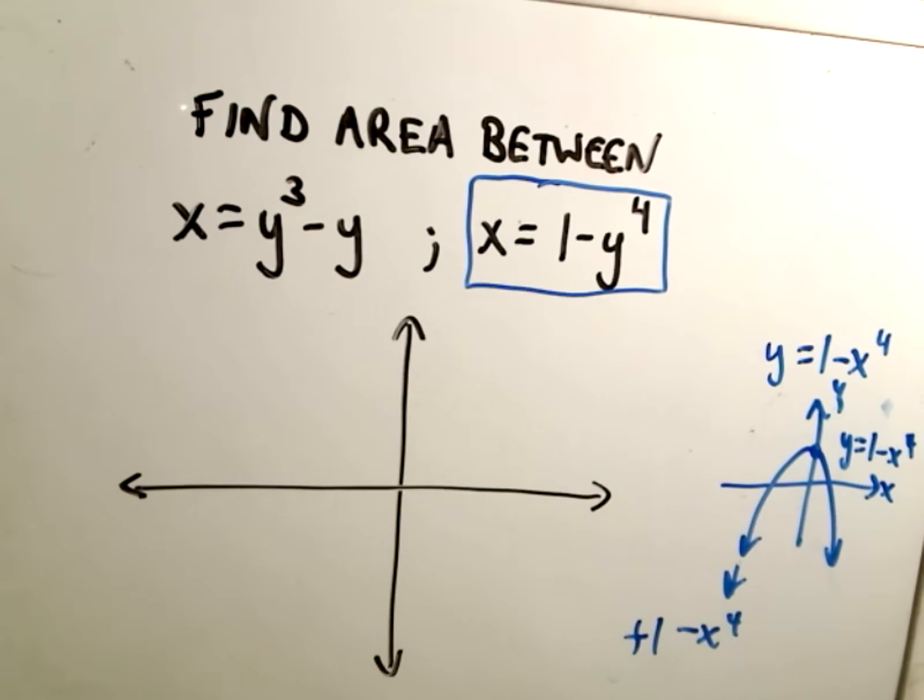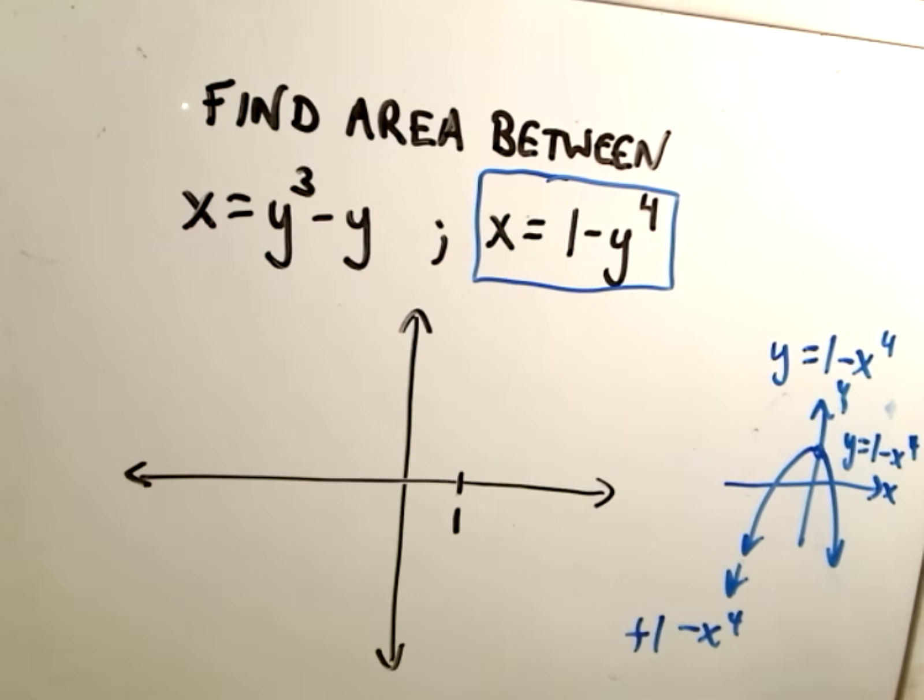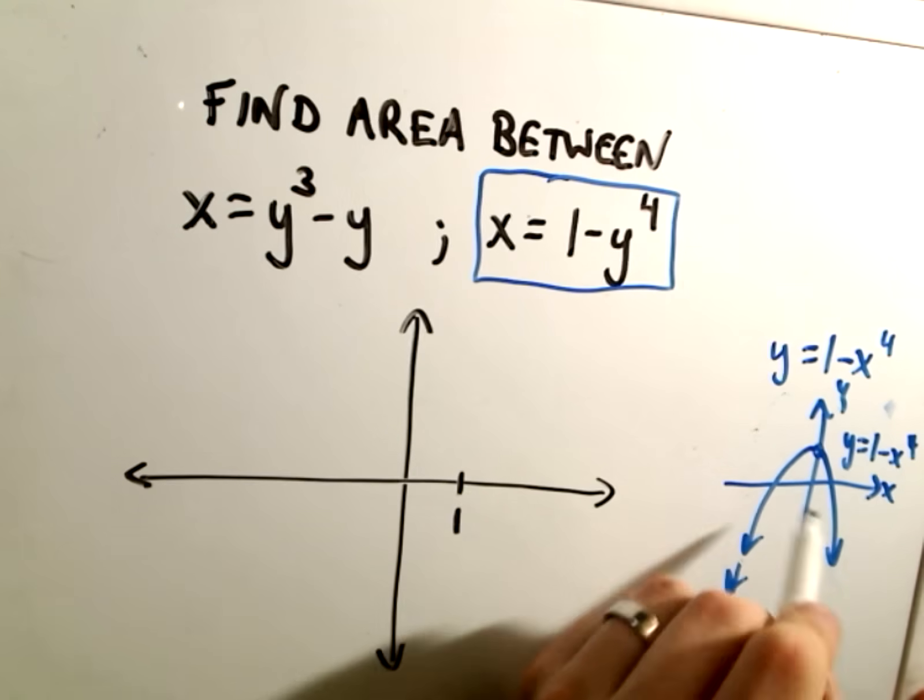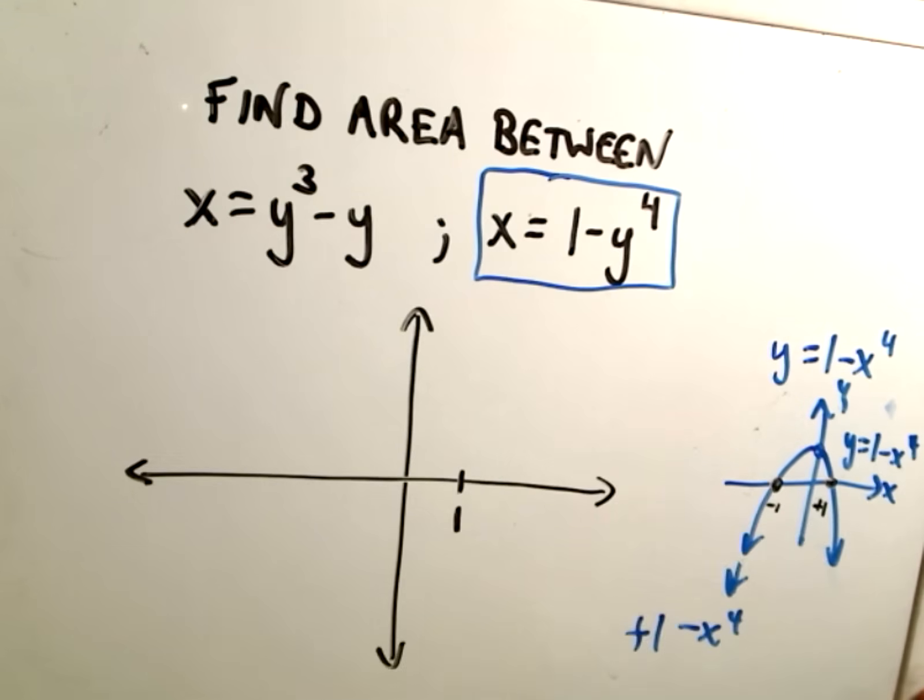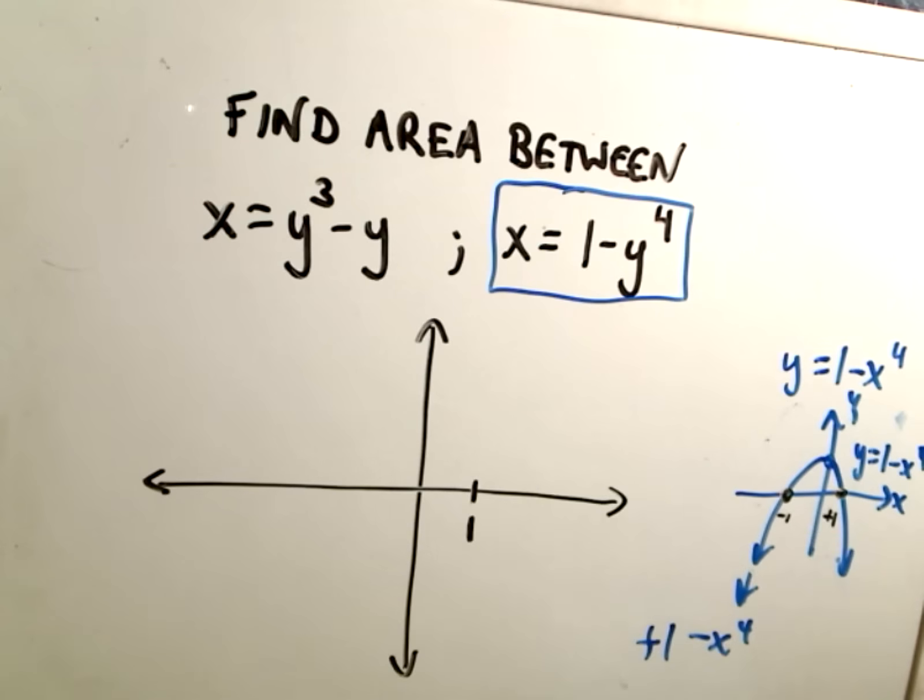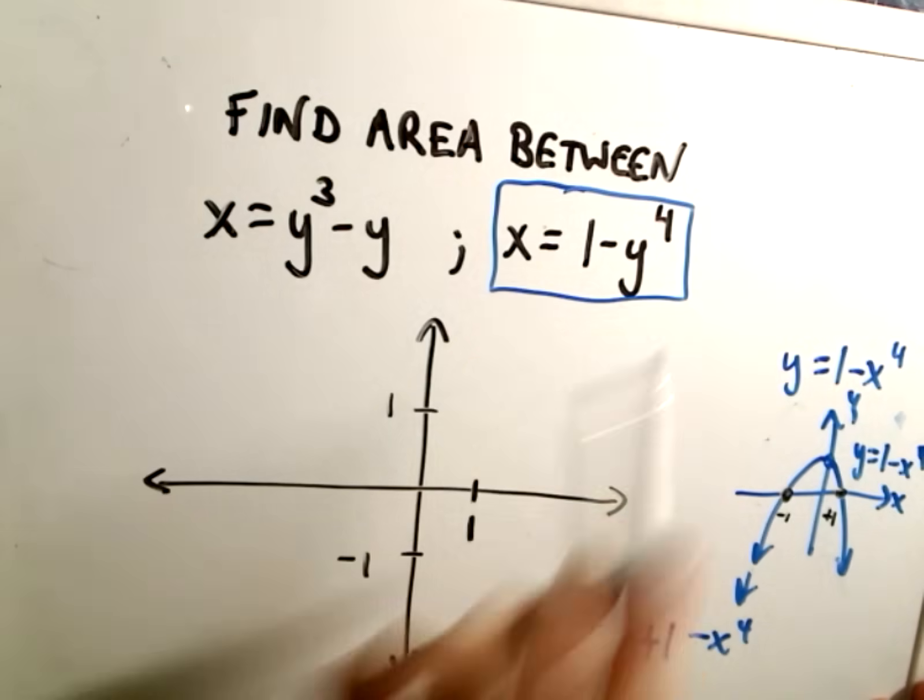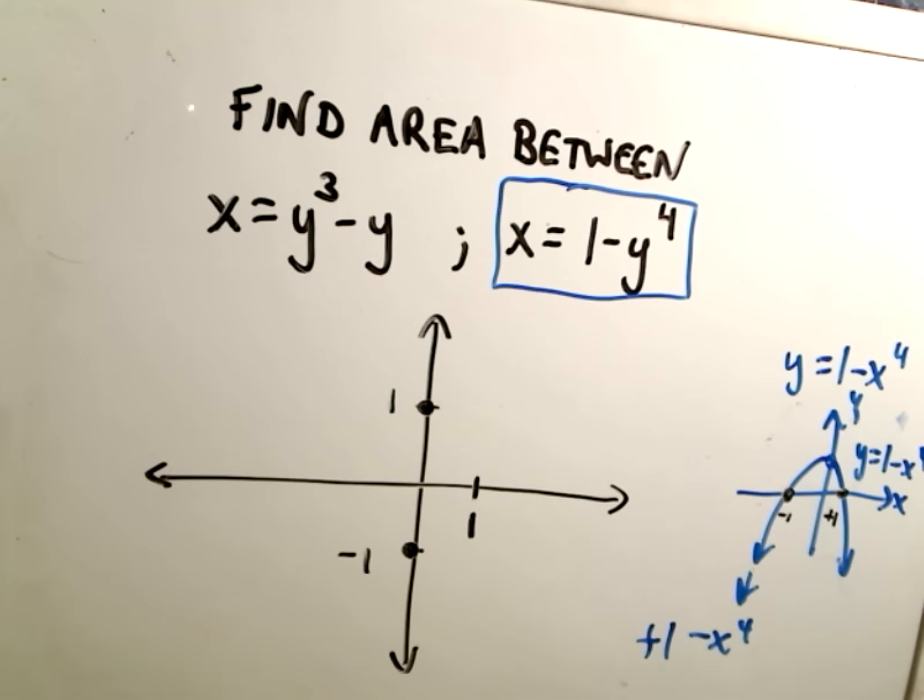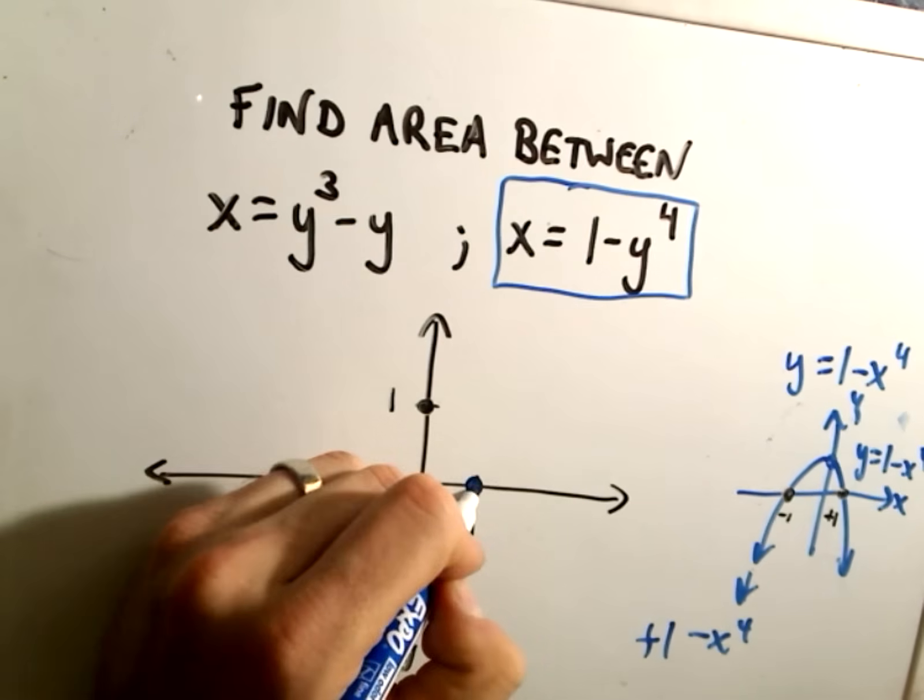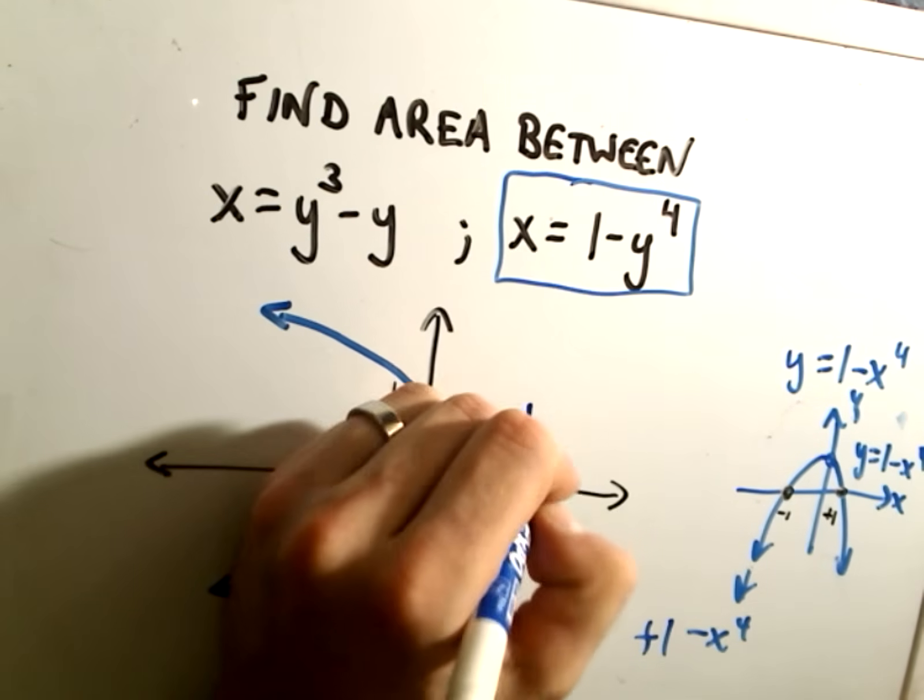So that would be our graph. Well, I know we're not graphing one minus x to the fourth. We're graphing x equals one minus y to the fourth, but use the same reasoning. For this graph, it starts where y equals one, so this graph is going to start where x equals one. And you could plot points. The points of intersection would be at positive one and negative one. So negative one and positive one on the y-axis. And notice if you plug in x equals zero, you'll solve and get y equals positive and negative one. So basically, it's going to be this, but opening to the left. So there's x equals one minus y to the fourth.